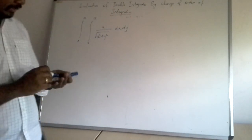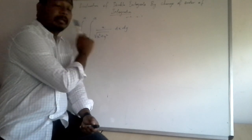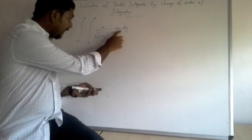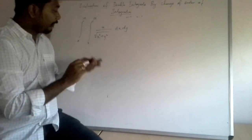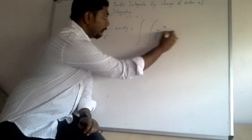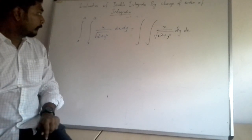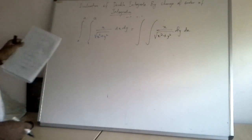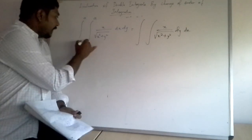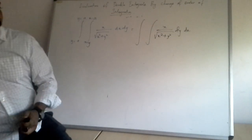If I have to do the direct method, I would first integrate with respect to x treating y as a constant, but x divided by root of x squared plus y squared is again very difficult to integrate in that order. So I have to change the order. The inner limit is with respect to dx, and the limits are x = y to x = a, with y = 0 to y = a.